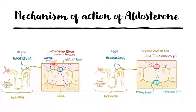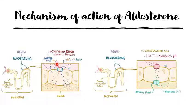The unspoken rule of physiology is that wherever sodium goes, water is going to follow. So as more and more sodium is absorbed, more and more water is also absorbed, which leads to an increase in blood volume and subsequently in blood pressure.